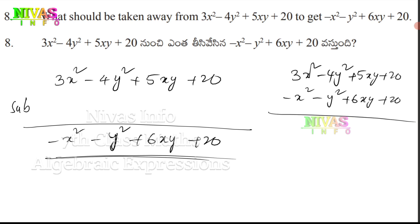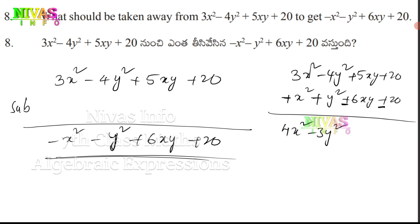So the science — the signs change: this is plus, this is plus, this is minus, this is minus, and this is minus. Now: 3x² and here x² gives 4x². For the y terms: 4y gives minus 3y². For xy: 5 and 6, and negative is big, giving 1xy.